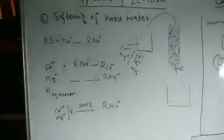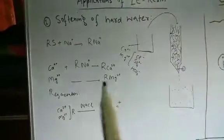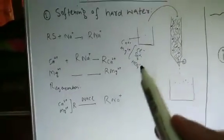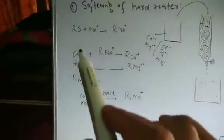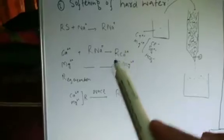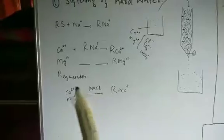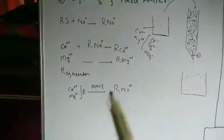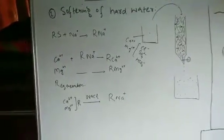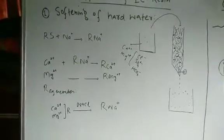To summarize diagrammatically: we first loaded the resin with sodium at the active sites, then poured the hard water sample with excess calcium and magnesium. Those ions replace the sodium at the sites. The sodium salts are released and the water coming out is soft water, free from calcium and magnesium. The column can then be regenerated by adding concentrated sodium chloride solution, and reused repeatedly.